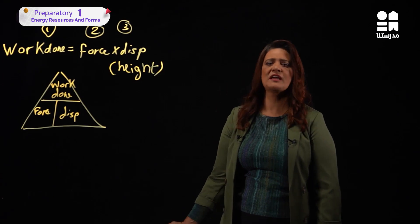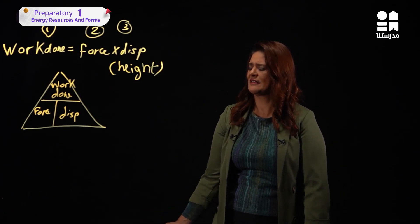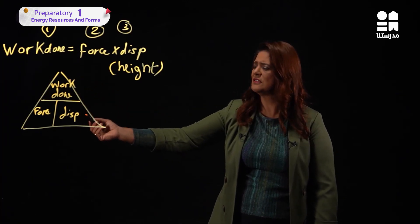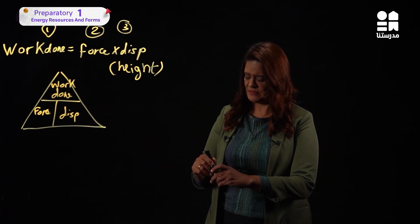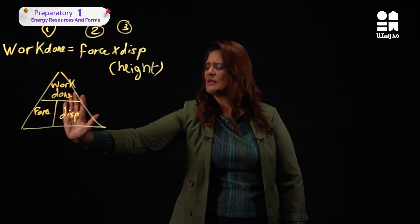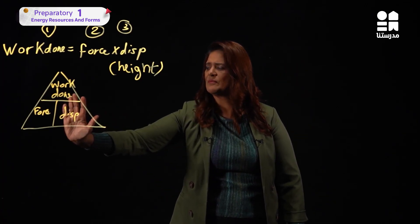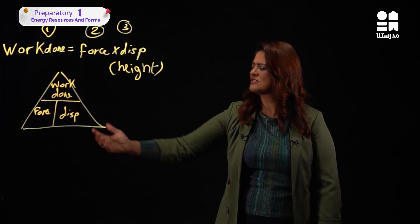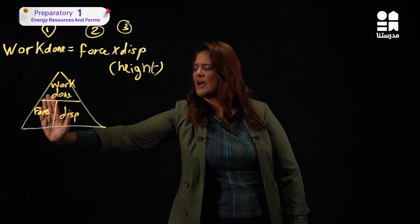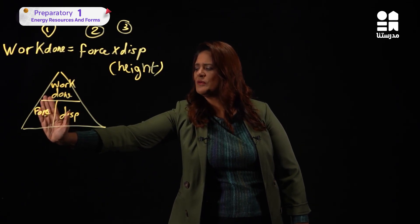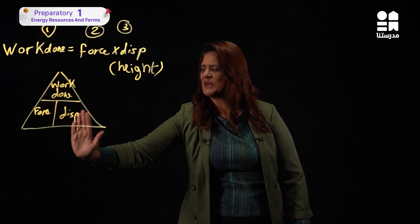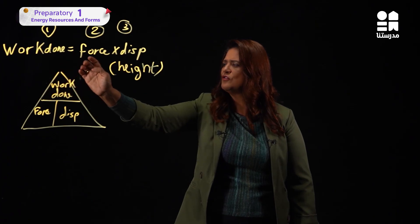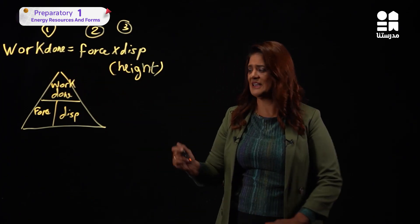Here is force and here is displacement — they are multiplied together. The one placed on top is work done. Why do I make this triangle? Because it's not always work done that's asked for — sometimes displacement is asked. If I want displacement, I cover it: displacement equals work done over force.